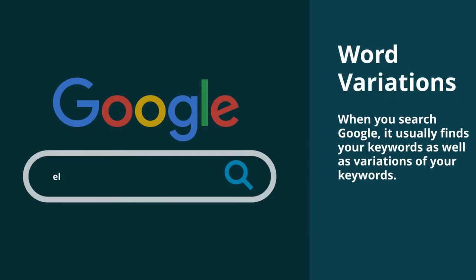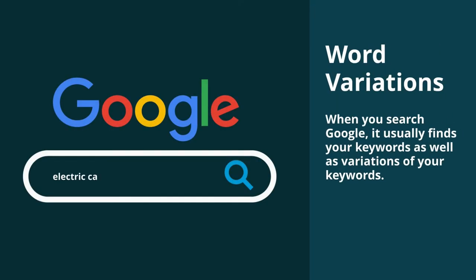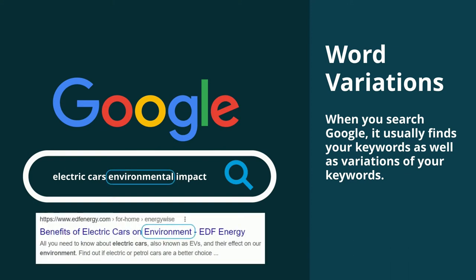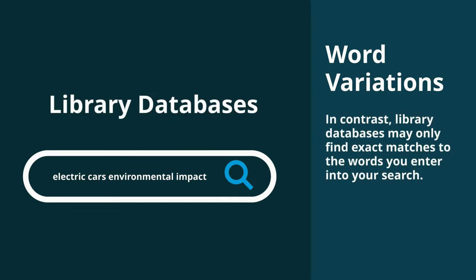When you search Google, it usually finds your keywords as well as variations of your keywords. For example, Google searches for the word environmental, but also finds environment. In contrast, library databases may only find exact matches to the words you enter into your search.